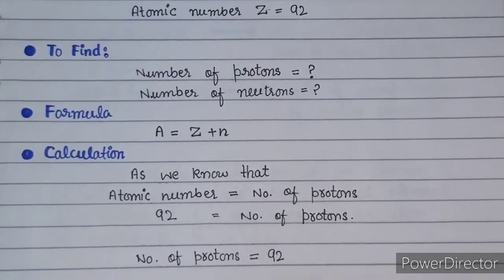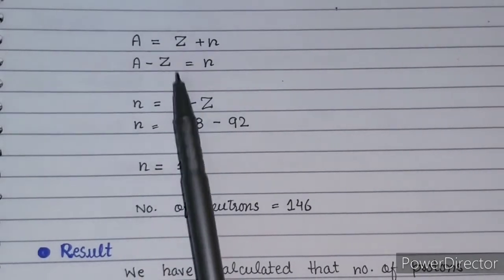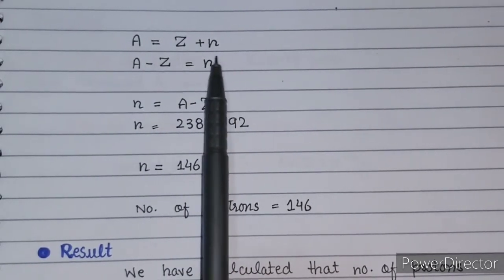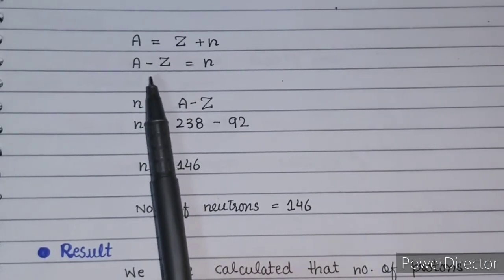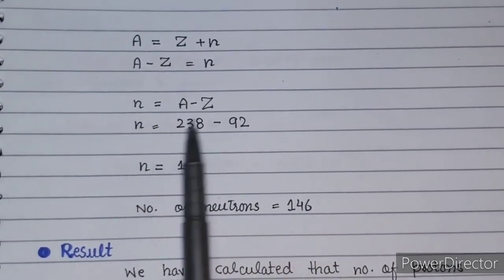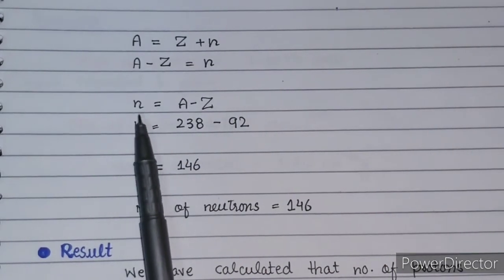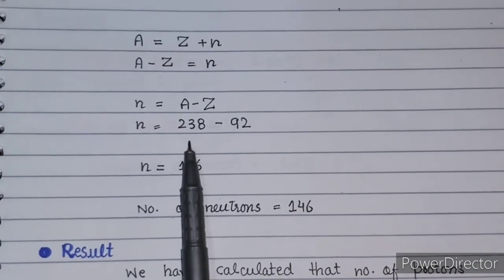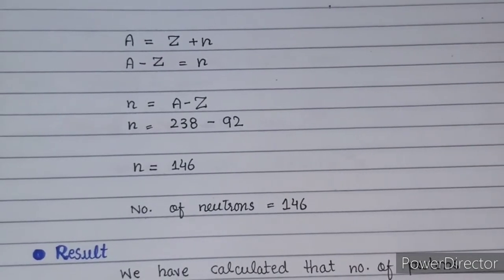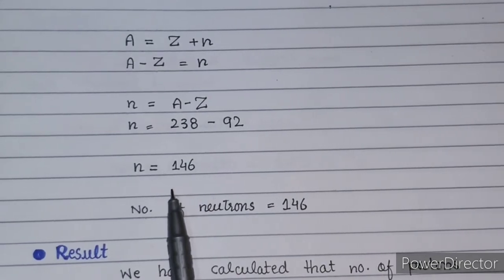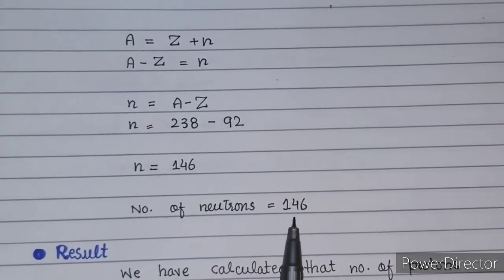Next, we find the number of neutrons. To calculate the number of neutrons, we use the formula A = Z + N. Rearranging, N = A minus Z. The atomic mass number A is 238 and the atomic number Z is 92. So the number of neutrons equals 238 minus 92, which gives us 146.